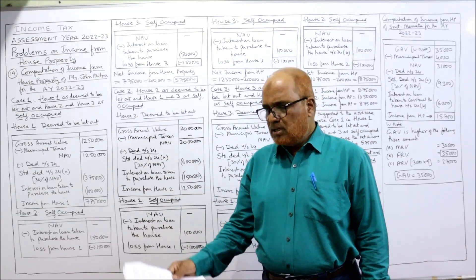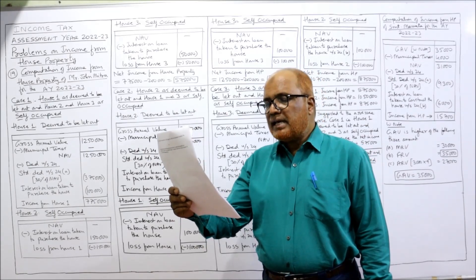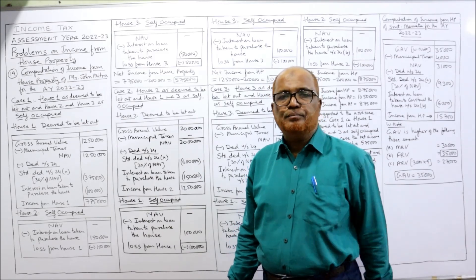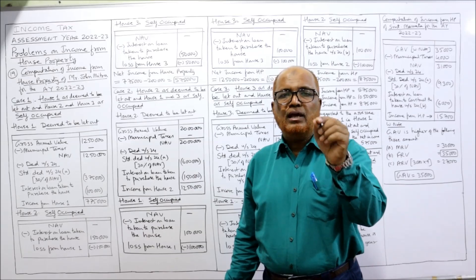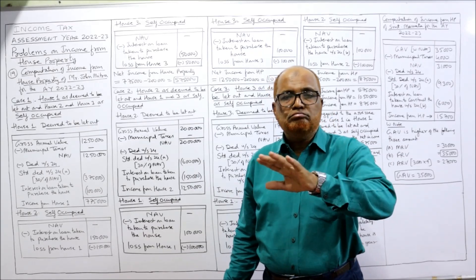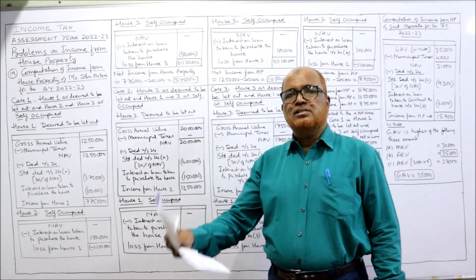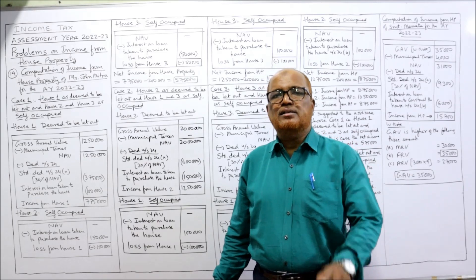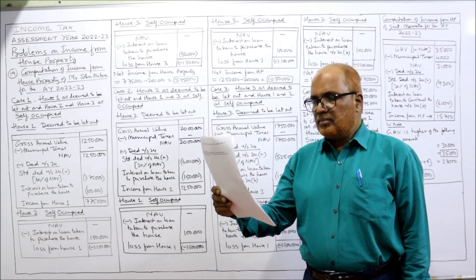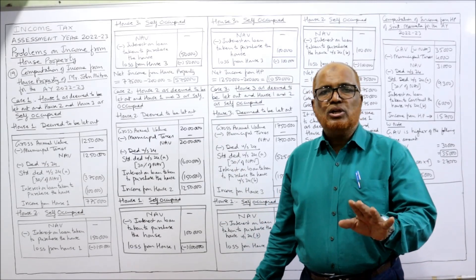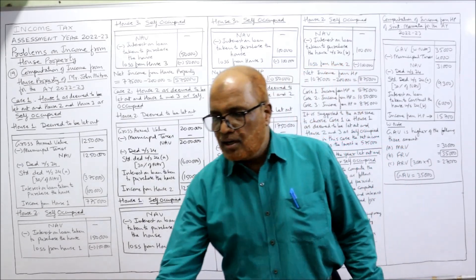The data given includes: cost of the house (not required), Municipal Rental Value (MRV), Fair Rental Value (FRV), municipal taxes due but not paid — no deduction allowed since it must be paid to be deductible — and interest on loan taken to purchase the house, allowed as deduction under Section 24(b). Insurance and depreciation are to be ignored; no deduction is given for these.